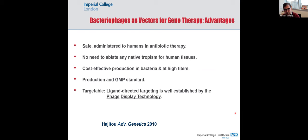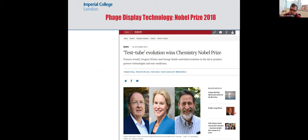The point is that they are safe. If you want a new technology to deliver nucleic acids, two crucial considerations are safety and efficacy — and phages are safe. We can deliver them systemically because they do not infect human tissues. They are cost-effective and can be produced at GMP standard. But to make a vector from a bacteriophage, first the phage has to enter human cells, and it has no receptor for that. So we decided to modify the capsid using phage display technology, which was awarded the Nobel Prize in Chemistry in 2018.